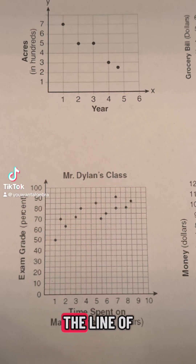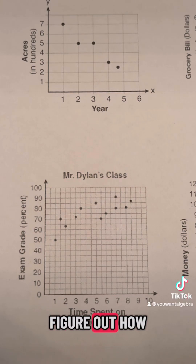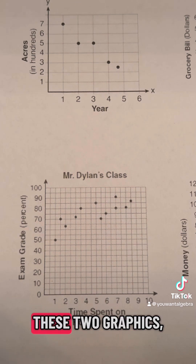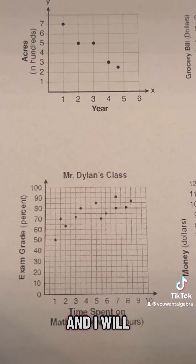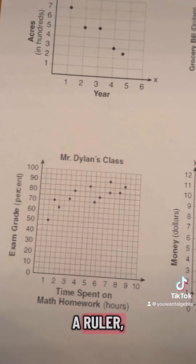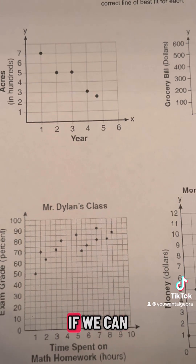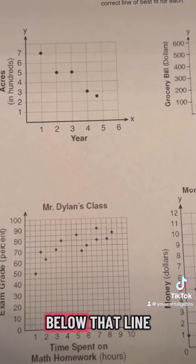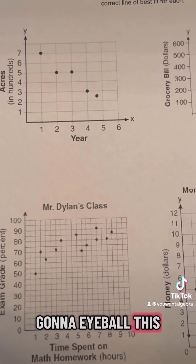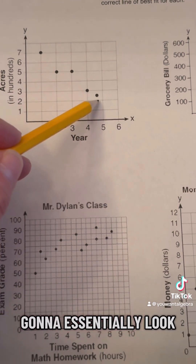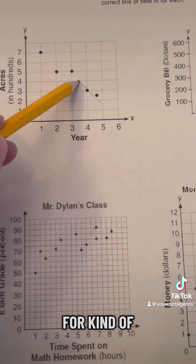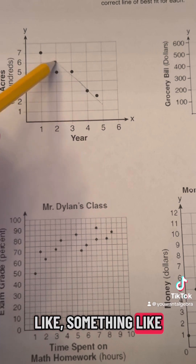So we're taking a look at the line of best fit and we're trying to figure out how to draw this by hand the best that we can. I'm taking a look at these two graphics and I will do them without a ruler because I don't have one with me. We want to kind of keep things even — if we can hit a couple points, great, but we just want to make sure there's evenness above and below that line with the scatterplot points. So I'm just going to eyeball this the best I can.